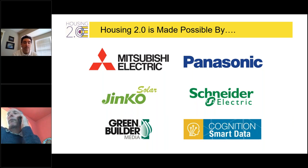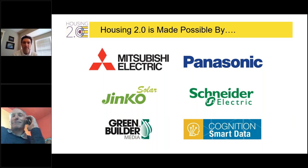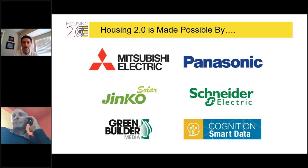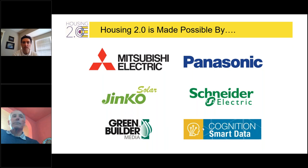Sam Rashkin is formerly the Chief Architect at DOE's Building Technologies Office, but he is now focused on creating and teaching the content for the Housing 2.0 Program. That content is based largely on Sam's latest book, Housing 2.0: A Disruption Survival Guide. The full program was established to help empower building professionals to design and construct higher performance, healthier, more sustainable homes at a fraction of the cost.